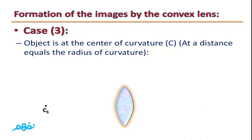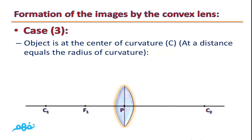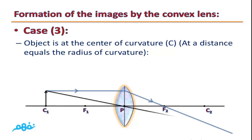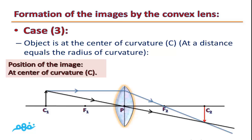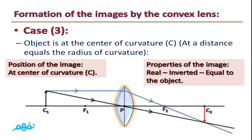Case 3: the object is at the center of curvature C, at a distance equal to the radius of curvature. The first light ray, parallel to the principal axis, refracts and passes through the focus. The second light ray passes through the optical center. The image is formed at the center of curvature; it is real, inverted, and equal in size to the object.